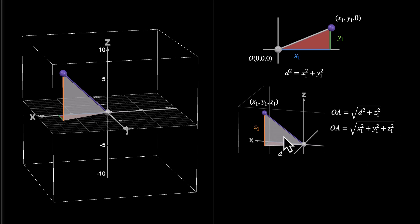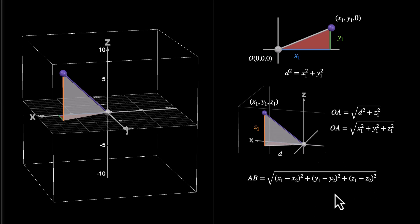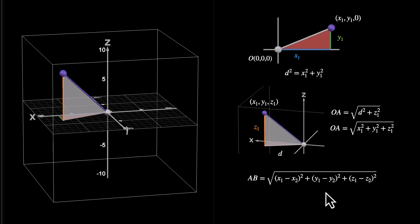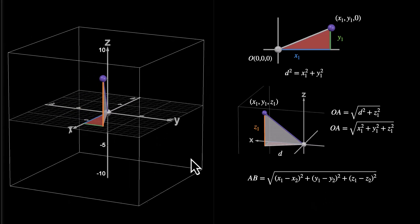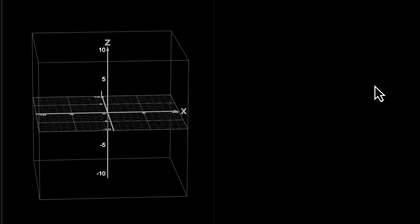This was a special case because we started from the origin. If we did not start from the origin, if we had two different points (x1, y1, z1) and (x2, y2, z2), our distance formula would be the square root of the sum of squares of differences of these coordinates. And this is our distance formula in 3D. Let's practice.